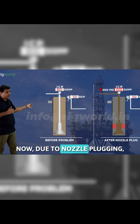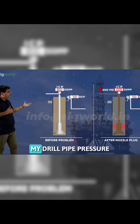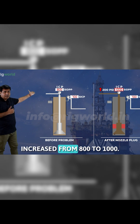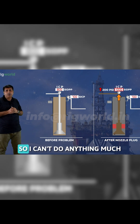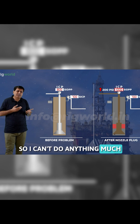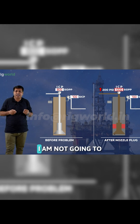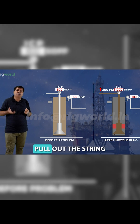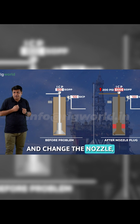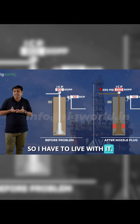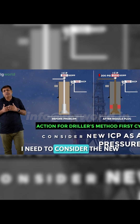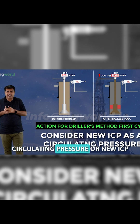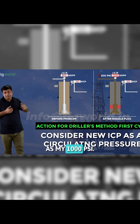Due to nozzle plugging, my drill-by pressure increased from 800 to 1000 PSI. I can't do much about this increase in pressure — I am not going to pull out the string and change the nozzle. I have to live with it. In this case, I need to consider the new circulating pressure, or new ICP, as 1000 PSI.